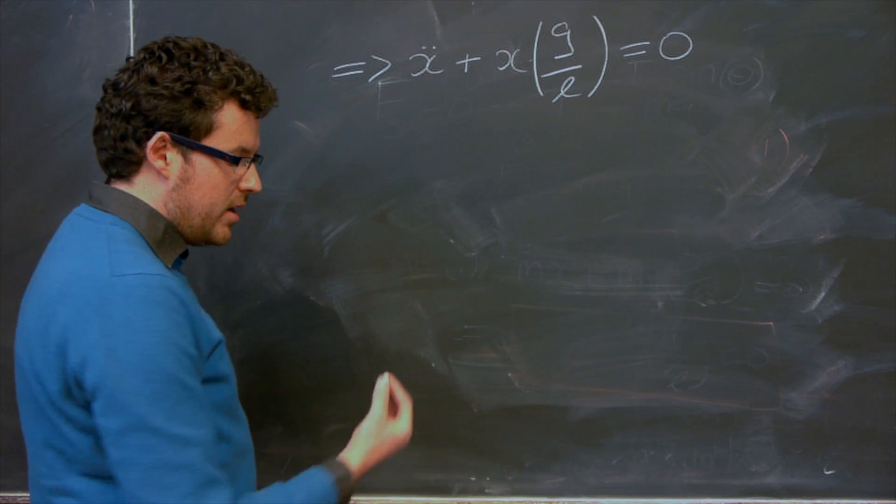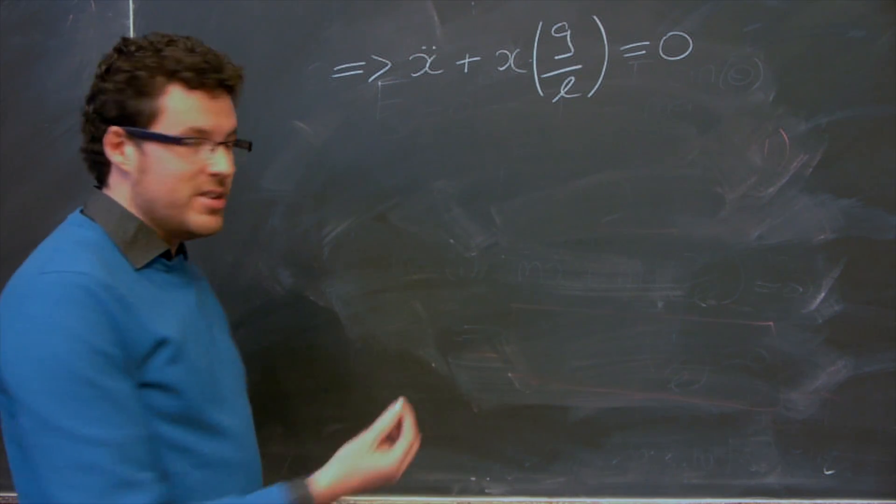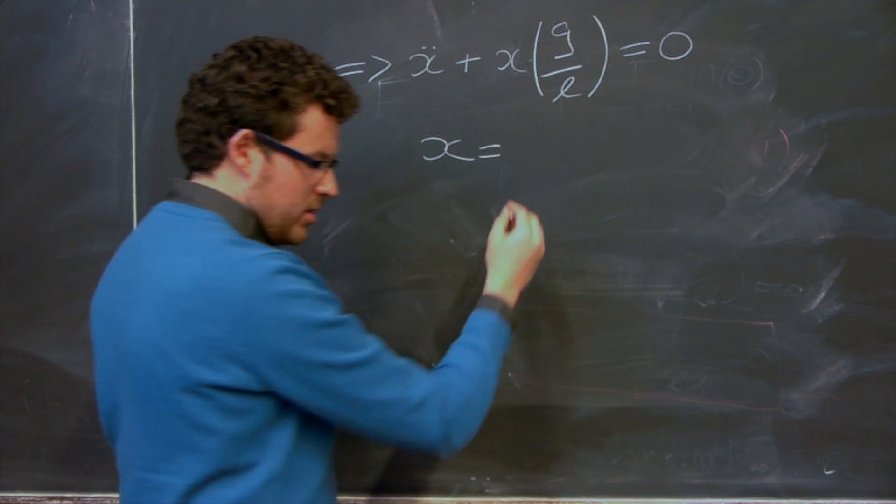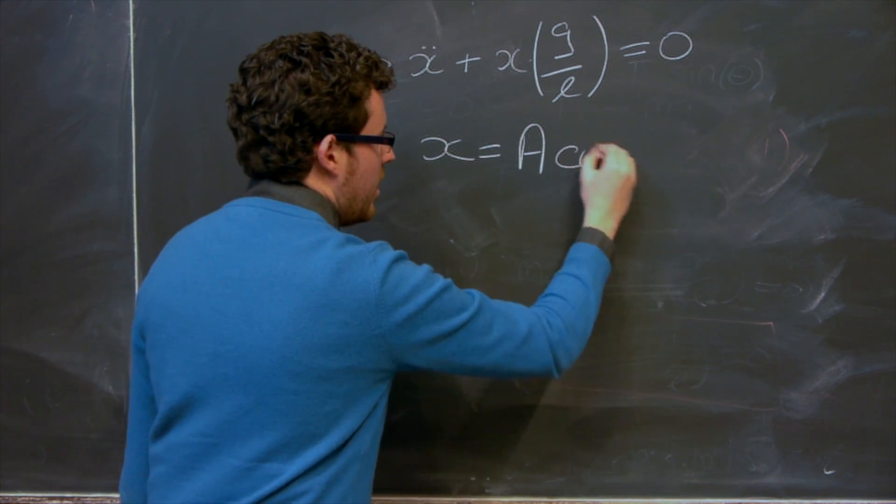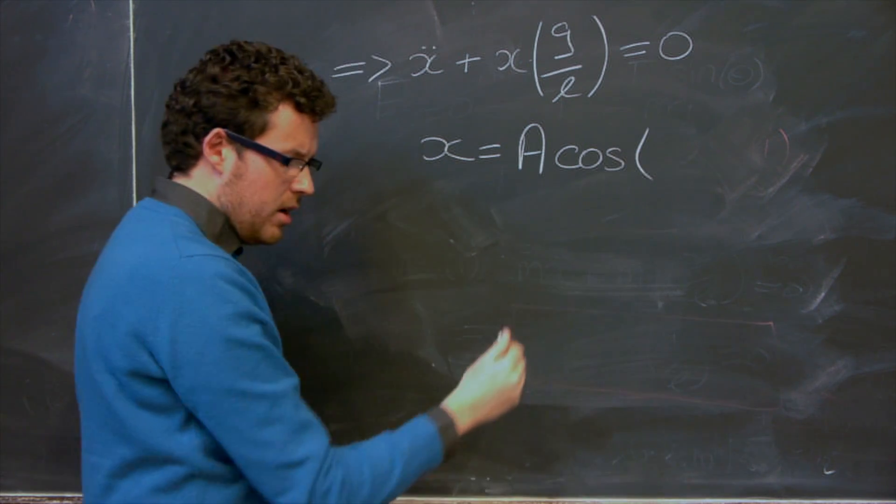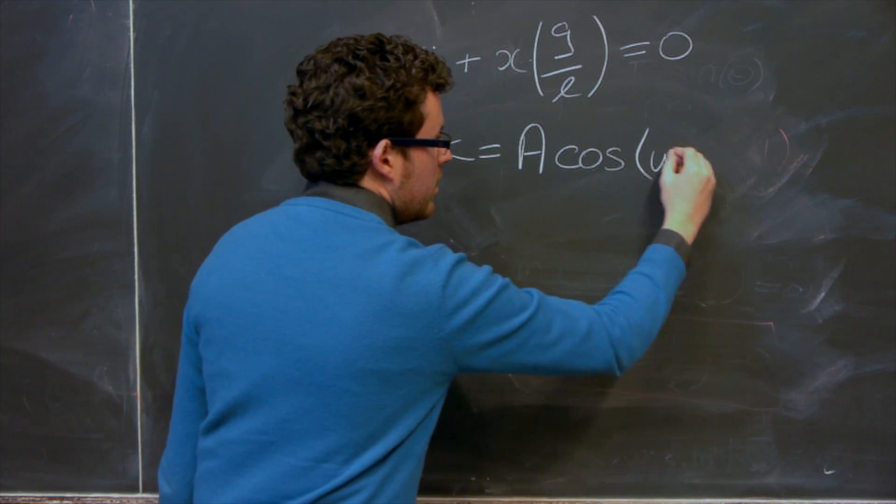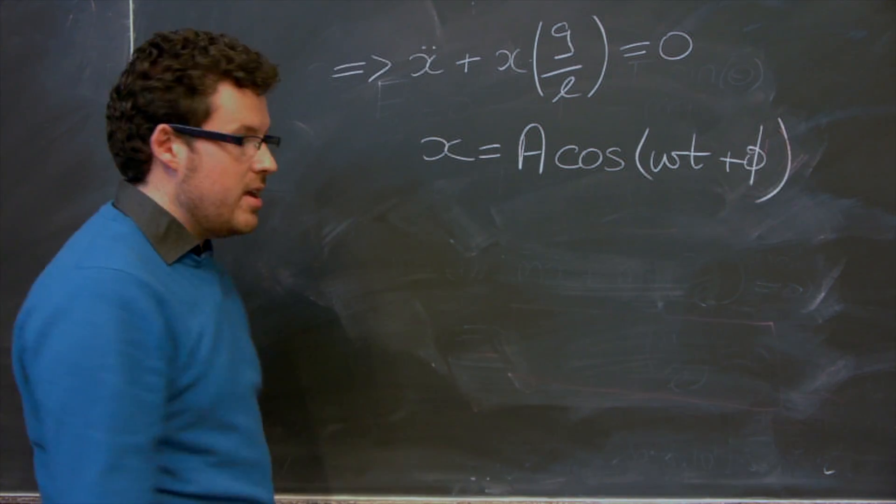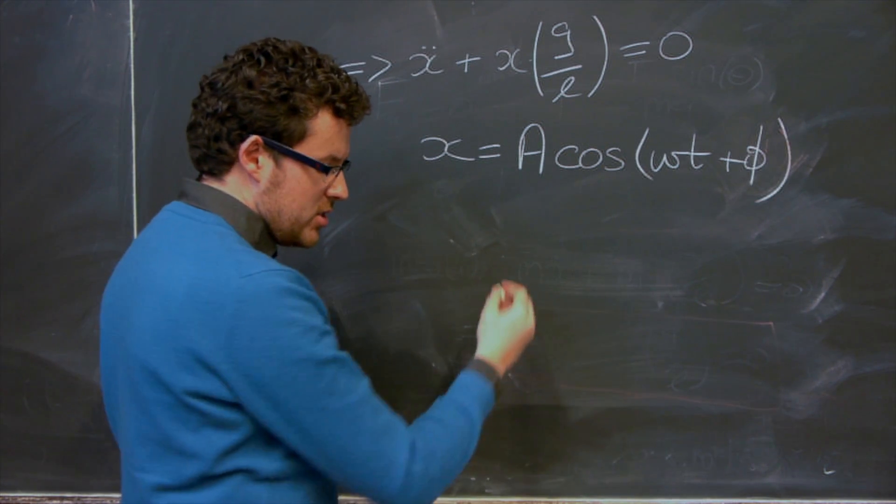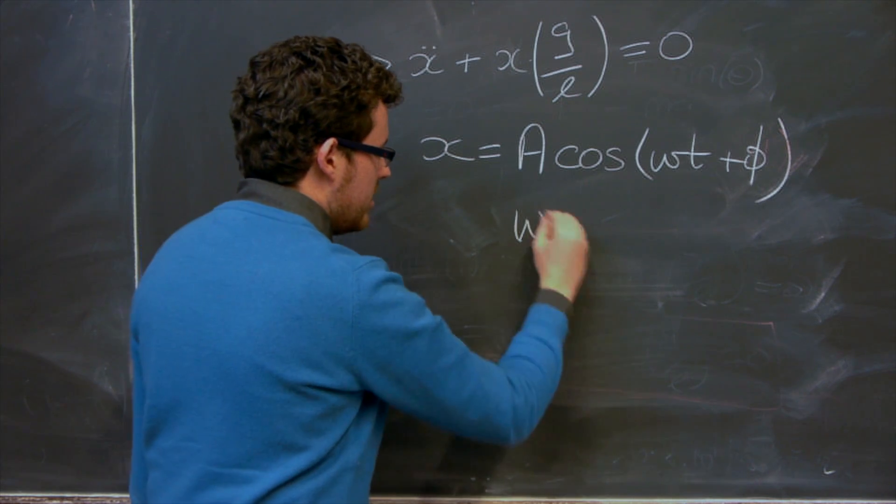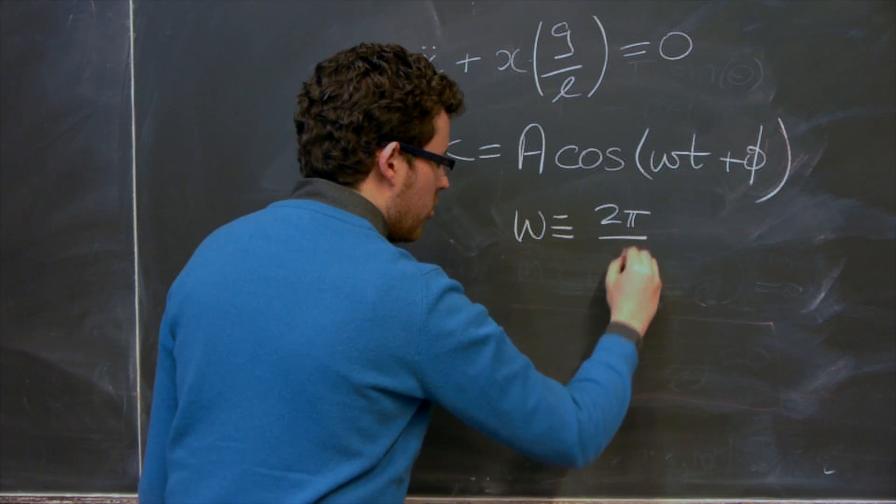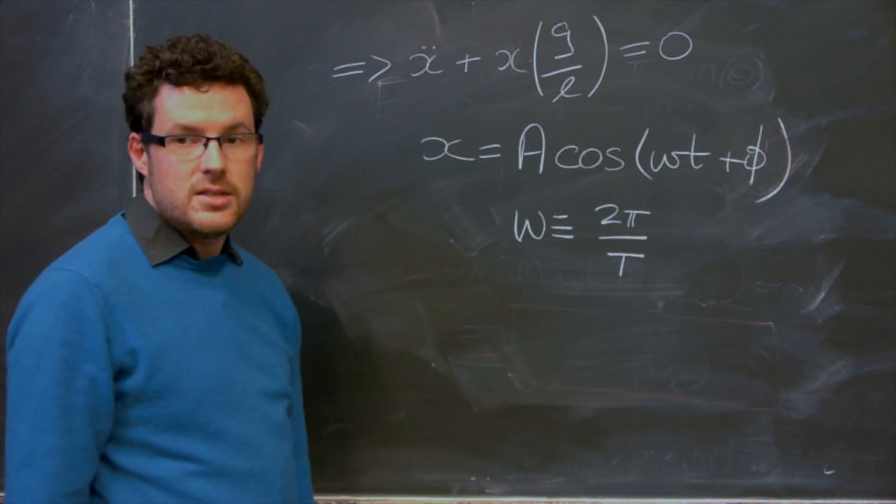And we know that the solution to this equation is given by x equals A the amplitude times cos of omega T plus phi is the phase. And you remember, hopefully, from your lectures that omega is given by, or defined as, 2 pi over T. And this T is the period.